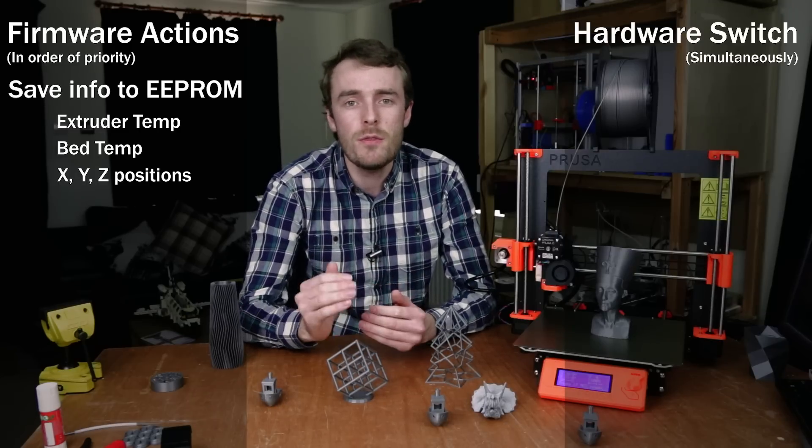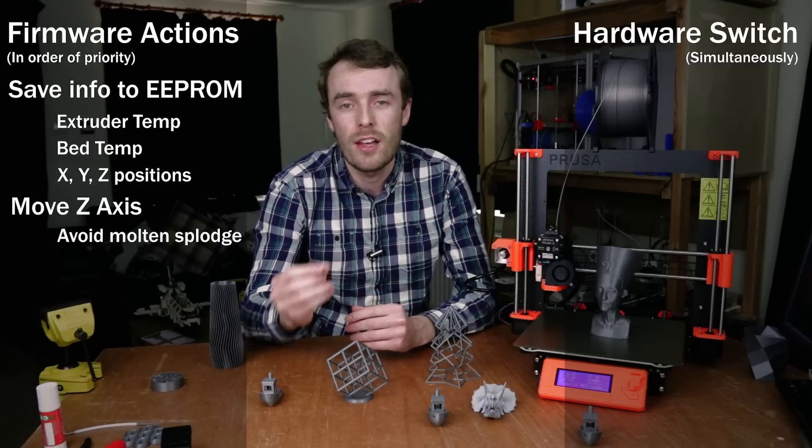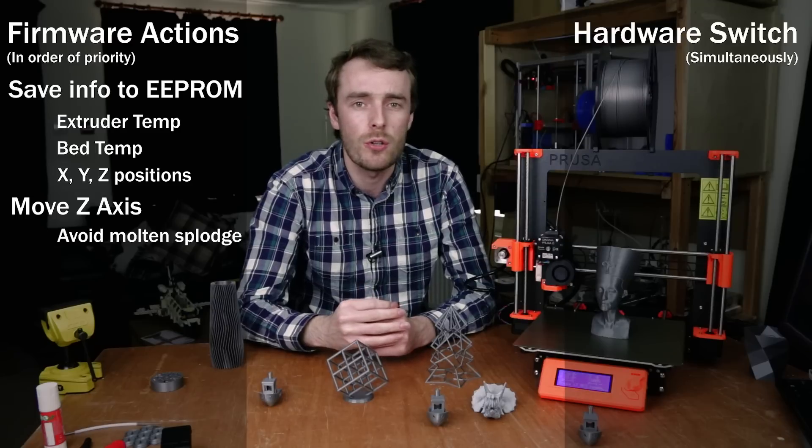The second thing it tries to do is move the z-axis up. By moving the nozzle away from the print, that hot part is not going to leave a big molten splodge on your print.